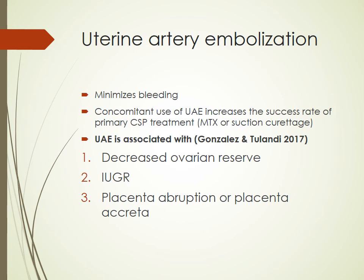Uterine artery embolization is a useful modality as it minimizes bleeding and can be used concomitantly to increase success rates — combined with methotrexate or suction curettage as primary treatment for caesarean scar pregnancy. However, uterine artery embolization is associated with decreased ovarian reserve, IUGR, placental abruption, and placenta accreta. For this reason, as with patients being treated for uterine fibroids, UAE is generally not recommended if the patient is still seeking fertility.